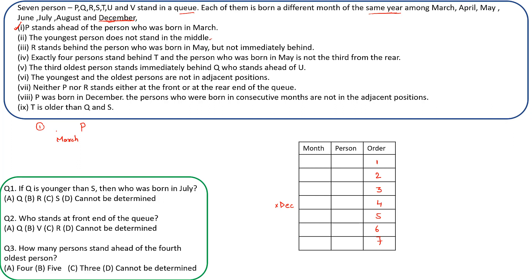The third clue says R stands behind the person born in May, but not immediately behind. So if someone is born in May, R will stand behind them with at least one gap — meaning at least one person is between May and R.